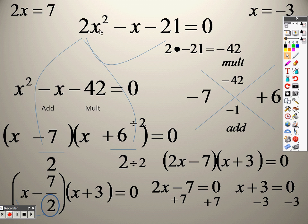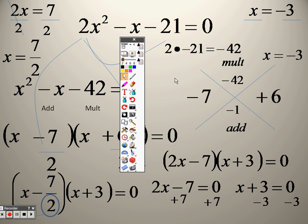So, I get 2x equals 7, x equals negative 3. Divide both sides by 2, and we end up getting x equals 7 over 2, and we get x equals negative 3 as our two answers.